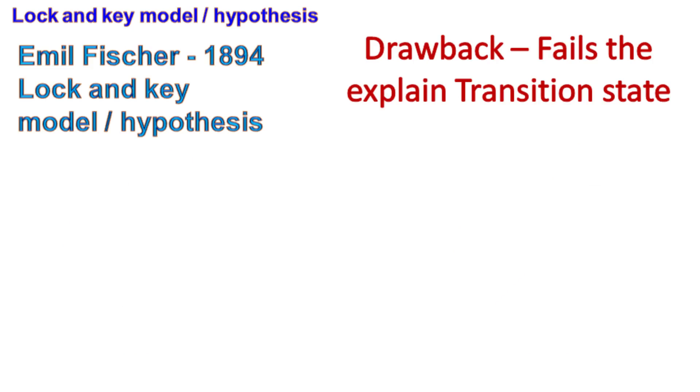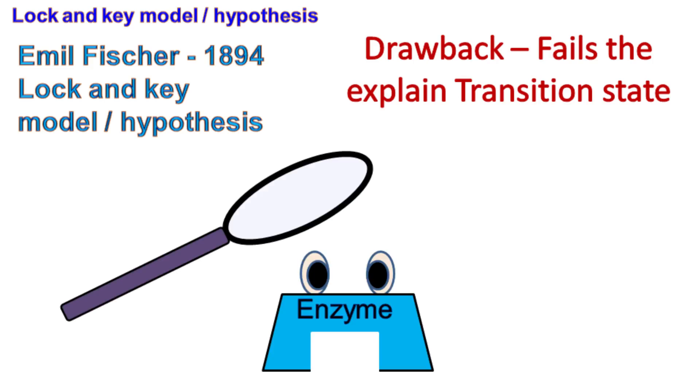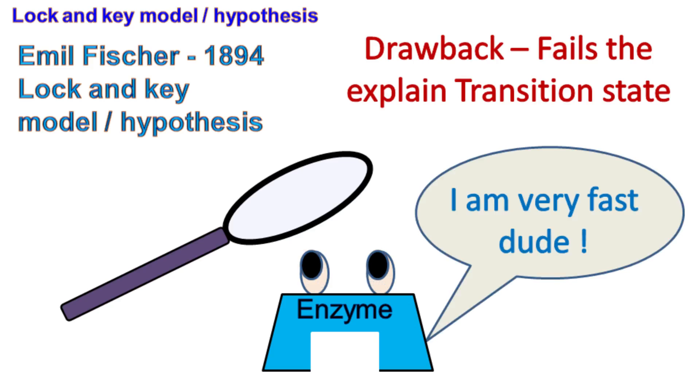Now, take a pause and let's understand what transition state means. When lock and key model was proposed, it was just a hypothesis. Scientists were curious to test this hypothesis and wanted to know how the enzyme converts a substrate into a product. However, enzymes are very fast and they can convert several substrate molecules into product in a fraction of a second.